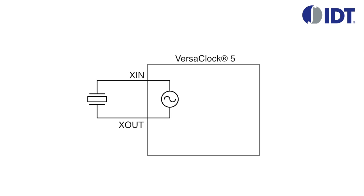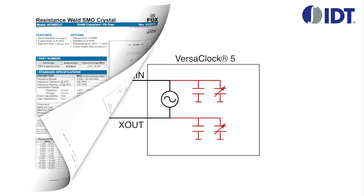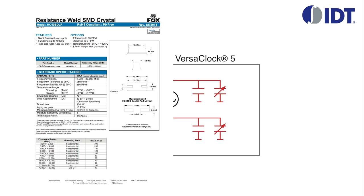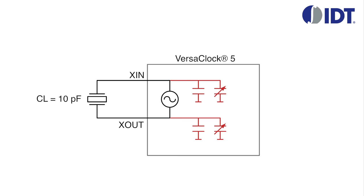The VersaClock 5 features internal tuning capacitors whose capacitance can be programmed to a value matching the crystal. To determine the tuning capacitance value, first look for the CL value in your crystal datasheet. In this example, CL is 10 pF. The internal tuning capacitors of the VersaClock 5 have to match this value.